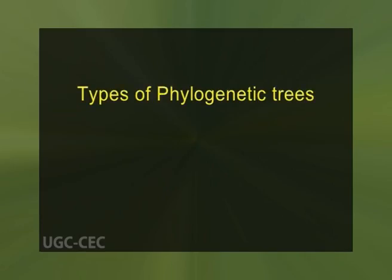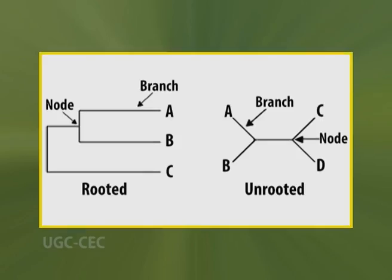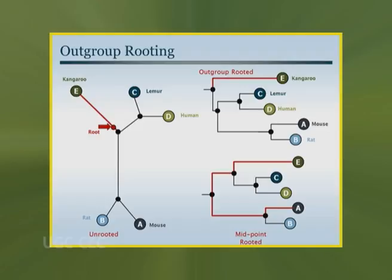Regarding types of phylogenetic trees — a rooted phylogenetic tree is a directed tree with a unique node corresponding to the most recent common ancestor of all the entities at the leaves of the tree. The most common method for rooting trees is the use of an uncontroversial outgroup: close enough to allow inference from trait data or molecular sequencing, but far enough to be a clear outgroup.